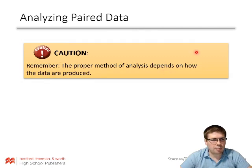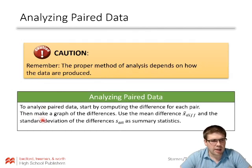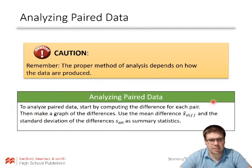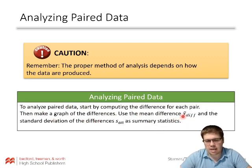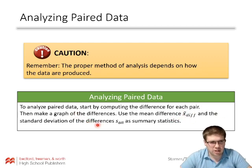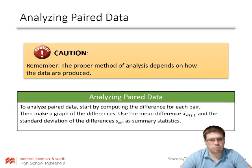Remember, the proper method of analysis depends on how the data are produced. To analyze paired data: start by computing the difference for each pair, then make a graph of the differences, and use the mean difference — X-bar sub diff — and the standard deviation of the differences — S sub diff — as summary statistics. That's how we'll approach it when data is paired.